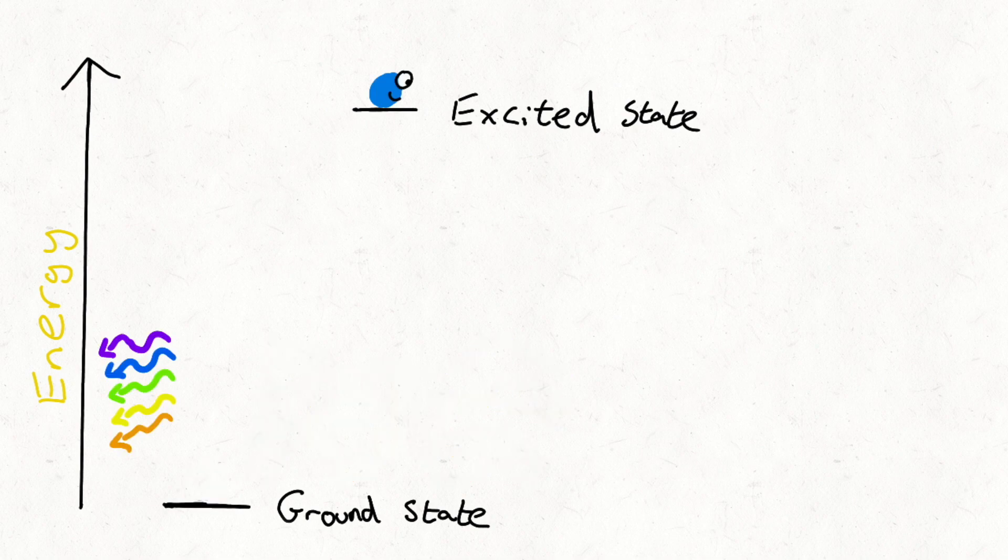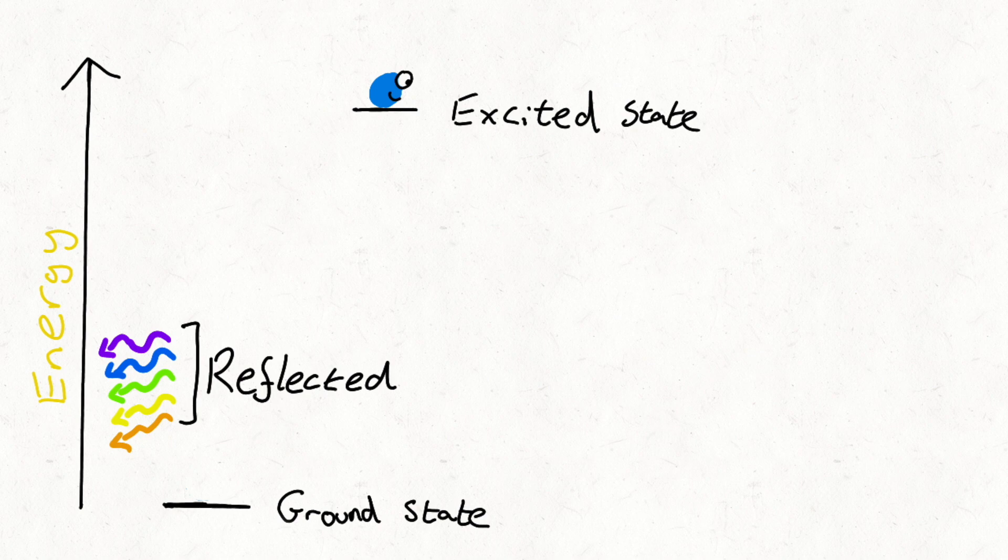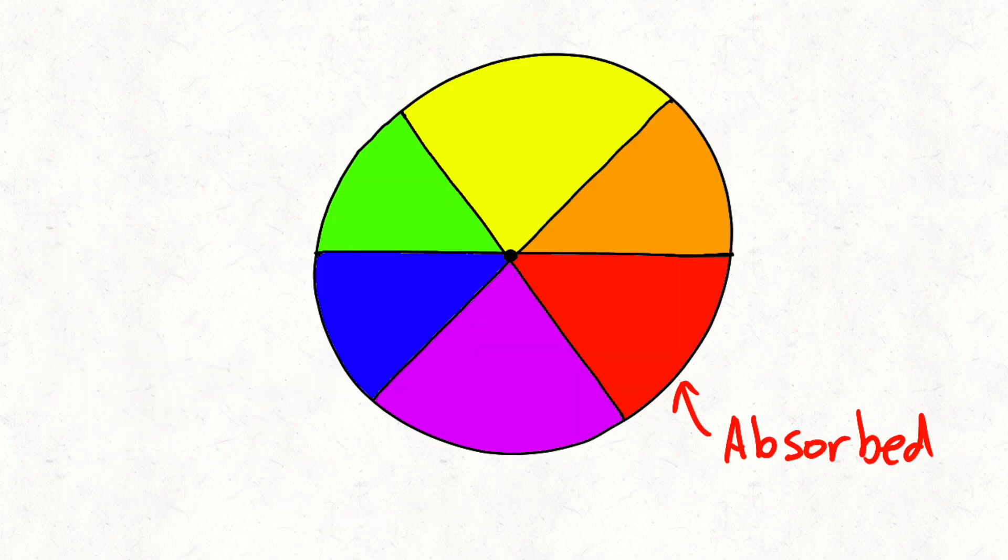The other wavelengths are reflected into our eyes and we see the complementary colour to the colour that was absorbed. In this case, looking at the colour wheel, we see green.